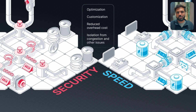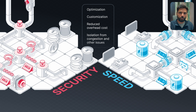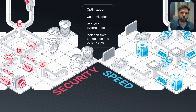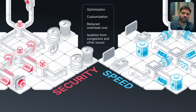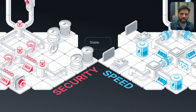The fourth benefit is isolation from congestion or other issues on the network. Since app chains operate independently, they are isolated from any congestion or higher network fees on wider blockchains, and also isolated from any issues happening on those blockchains. So in a way, app chains are more stable and have predictable performance.